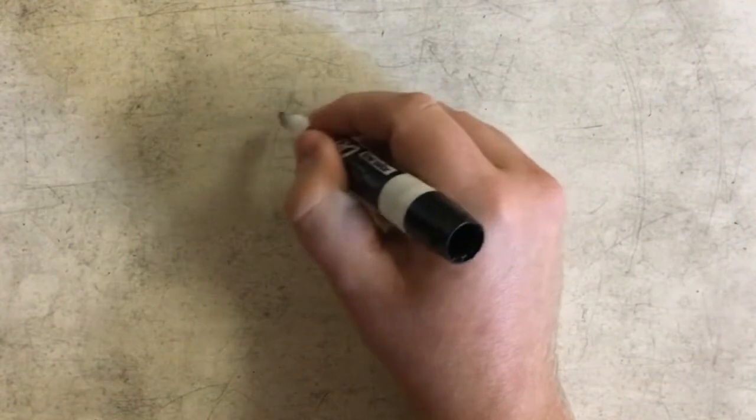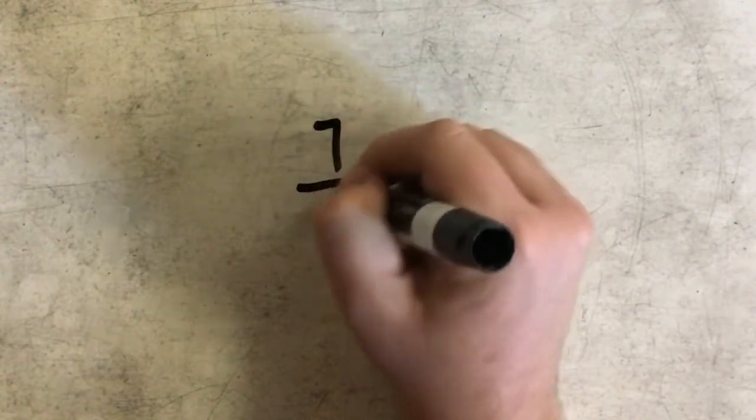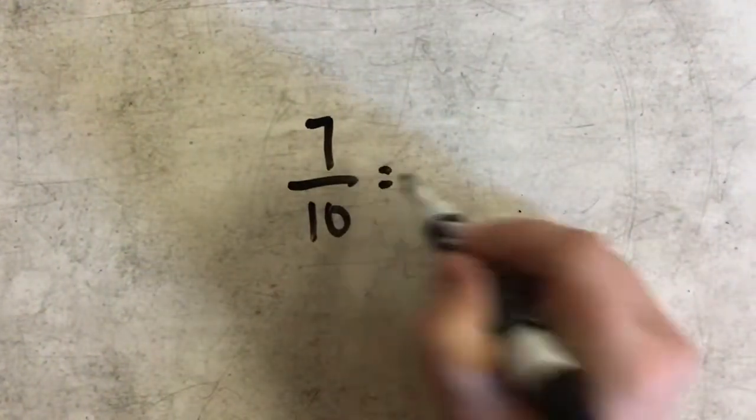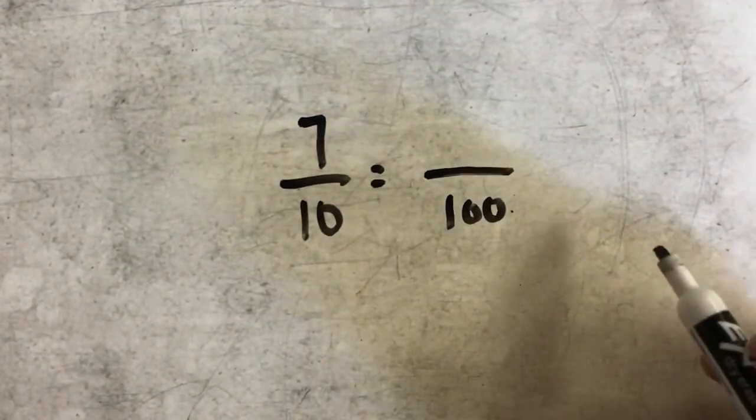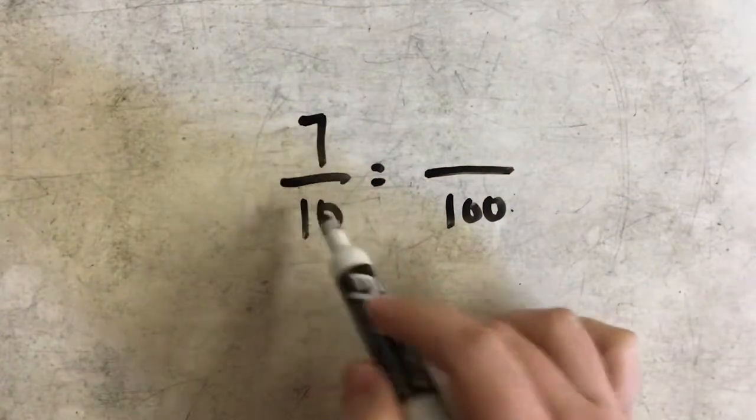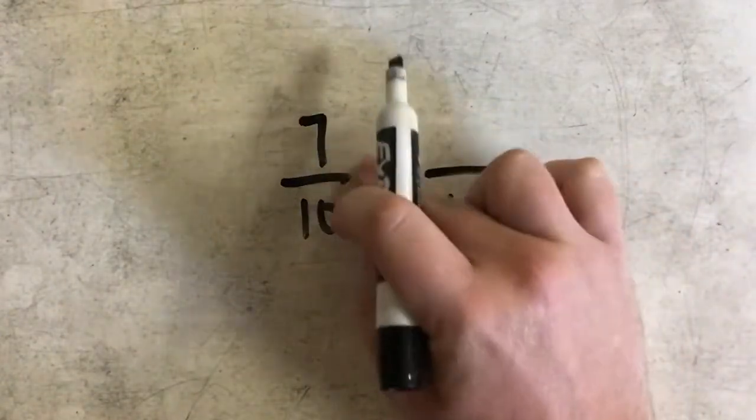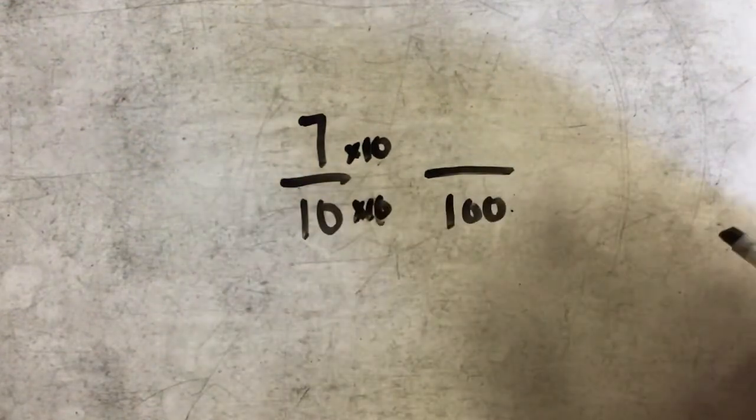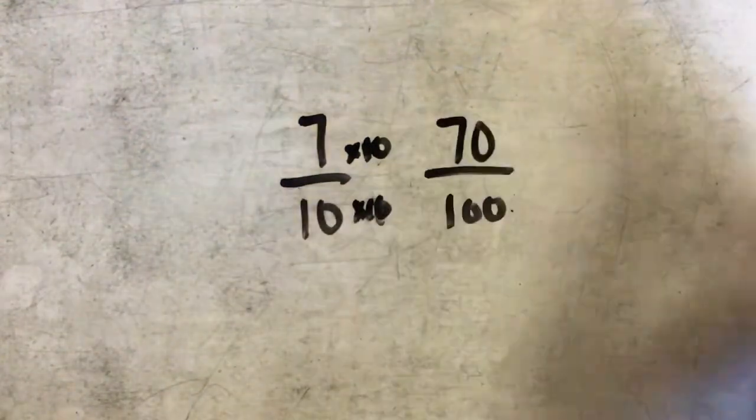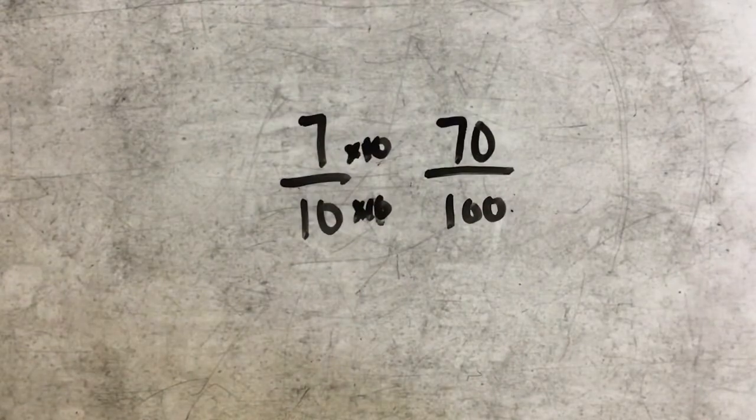For instance, seven-tenths. If I wanted to write that as an equivalent fraction with hundredths in the denominator, I would multiply seven by ten, because I had to multiply ten by ten. And seven times ten would give me seventy-hundredths.